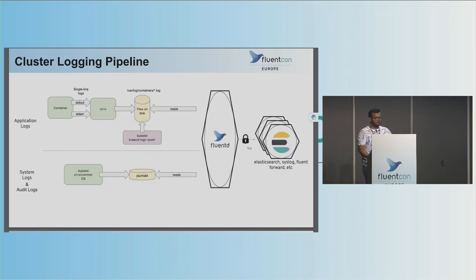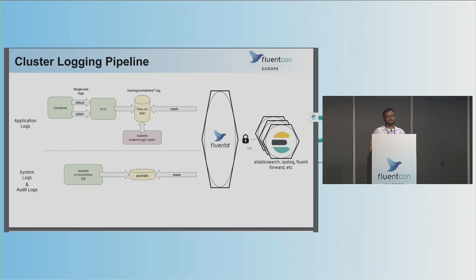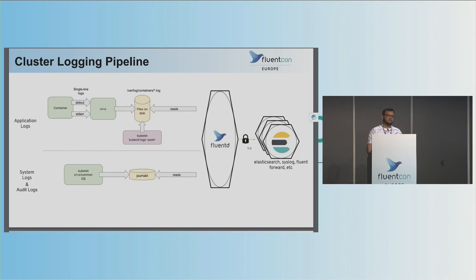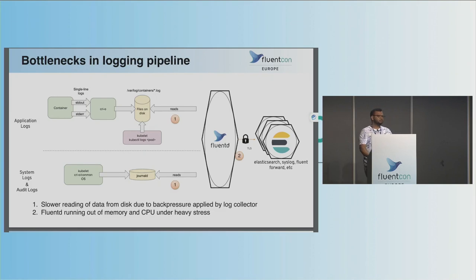This slide shows a very high-level view of how our logging pipeline looks. Logs from containers — in the form of stdout and stderr streams — are written to log files on disk by the container runtime interface. Logs from these files, stored in varlog/containers, are read by FluentD, normalized, and then sent to persistent storage such as Elasticsearch, Syslog, or FluentForward. However, this seemingly simple architecture has many bottlenecks.